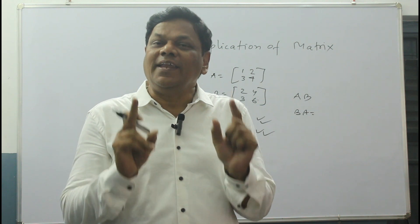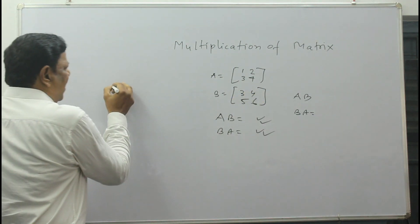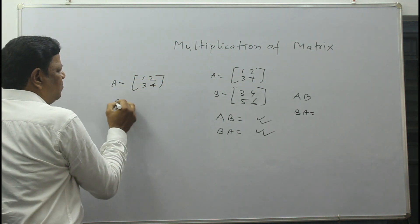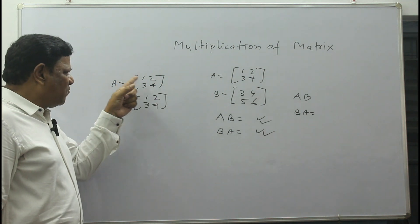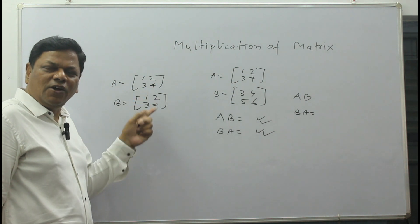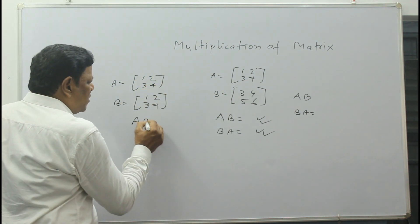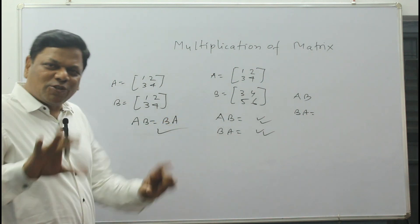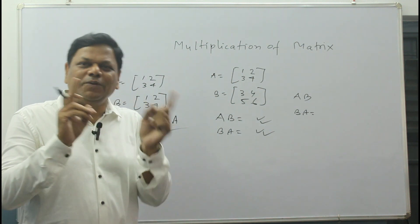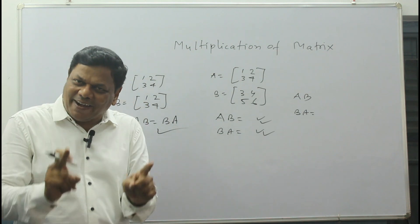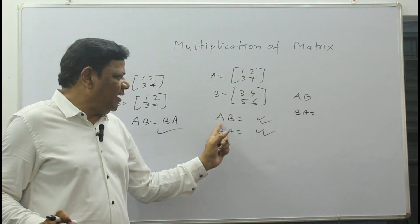AB equal to BA is possible only when both matrices are equal — that means if A is given as [1, 2, 3, 4] and B is also given as [1, 2, 3, 4]. These two are equal matrices because they have the same elements in the same positions. The order is also the same, so both are equal matrices. As they are equal, AB equal to BA is possible. But if the matrices are different, then AB is not equal to BA.